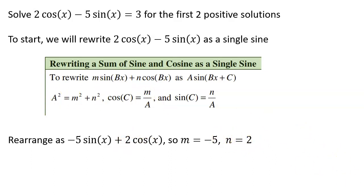Then we can go ahead and use the rest of our process. So to find our amplitude, a squared is m squared plus n squared, which is 29. And then square root would give me a is the square root of 29.